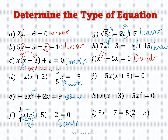Negative 5x times (x plus 3): after using the distributive property, it becomes negative 5x squared minus 15x equals 0. Now you can see the highest value of the exponent equals 2, so it is a quadratic equation.